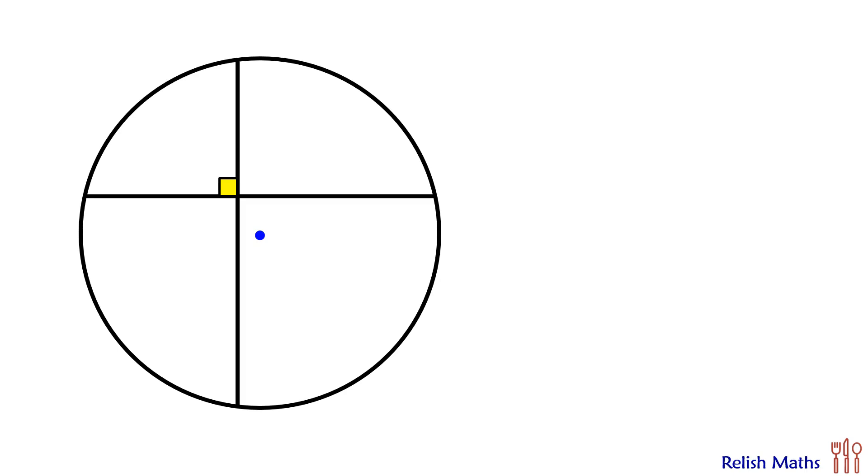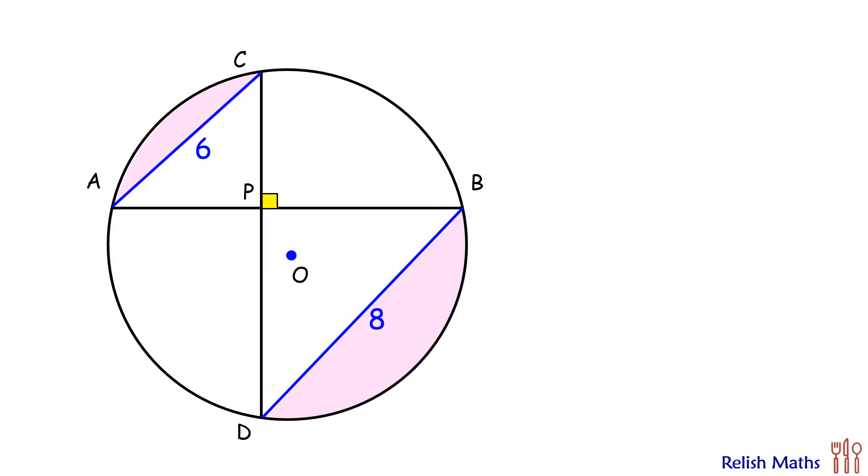Welcome everyone to this interesting question. Given are two chords perpendicular to each other, and the endpoints of the chords are joined together. The length of the new chords formed are given as 6 centimeters and 8 centimeters. Using this limited data, we have to find the area of the shaded segment. Let's check the solution.